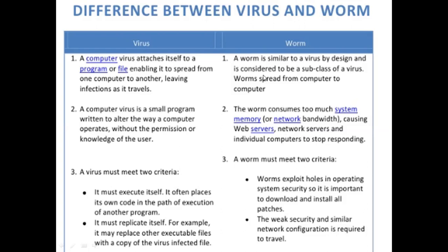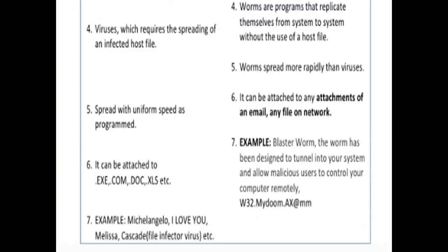The worm also has two types of criteria. Worms exploit holes in the operating system security, so it is important to download and install all the patches. When a worm enters a particular operating system, it corrupts the OS internally — the files that are major and important to run the OS. The worm will delete terms of the root system and decrease security protocols, collapsing all the security protocols immediately installed in that operating system.